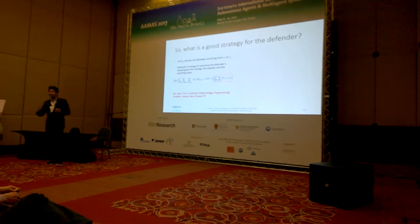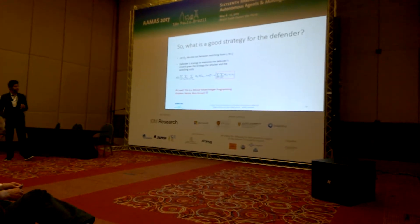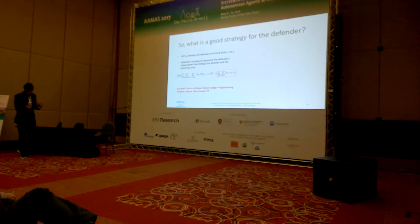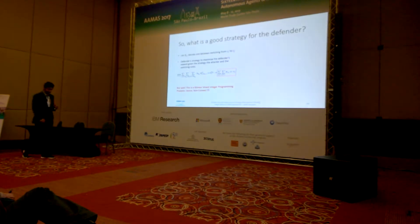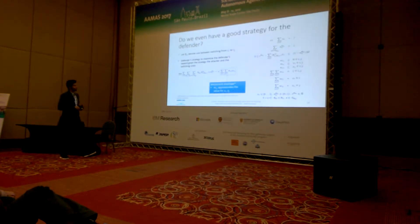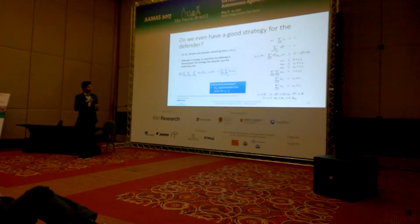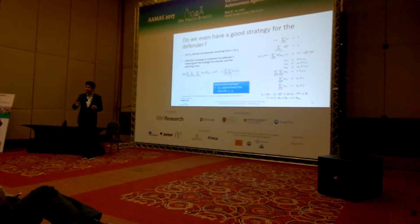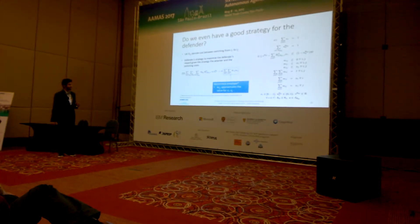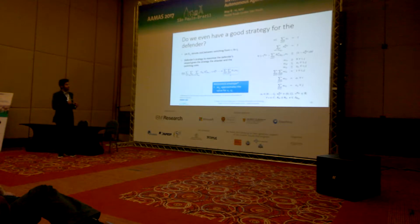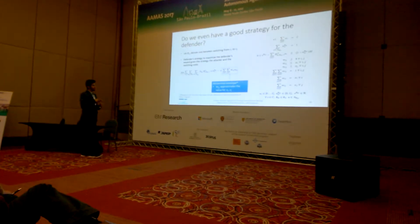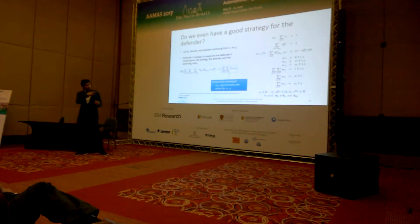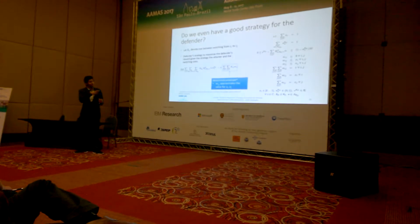Unfortunately, x_i times x_j makes this a bilinear mixed-integer program, which is non-convex. To handle this, we replace the product x_i times x_j with a single variable w_ij and apply extra constraints known as the McCormick envelope along with problem-specific constraints to get a tractable formulation.